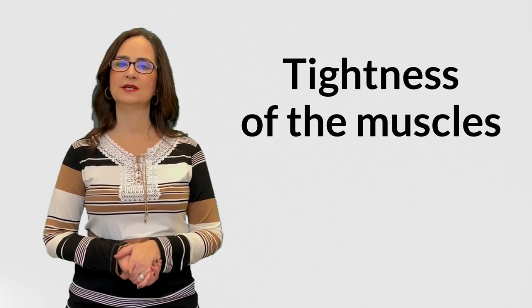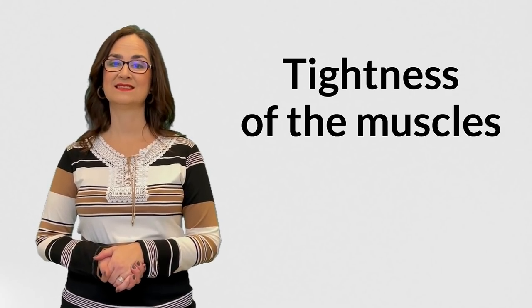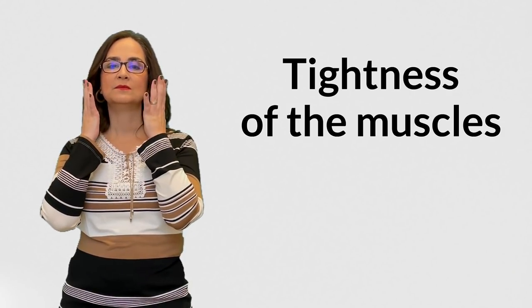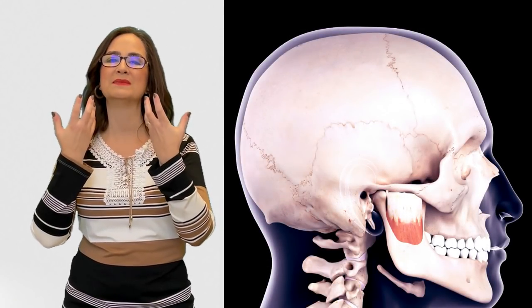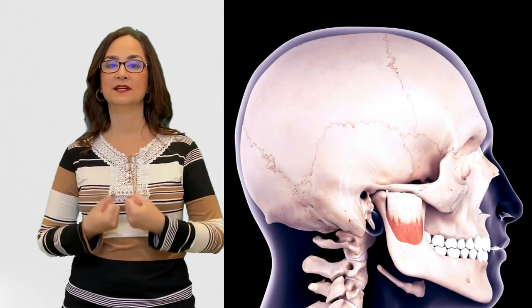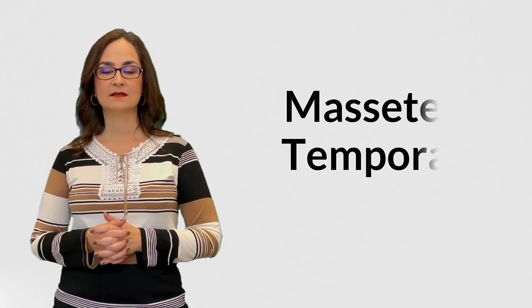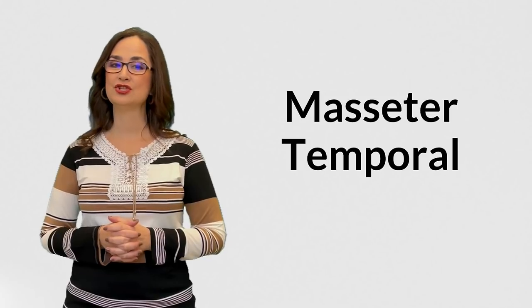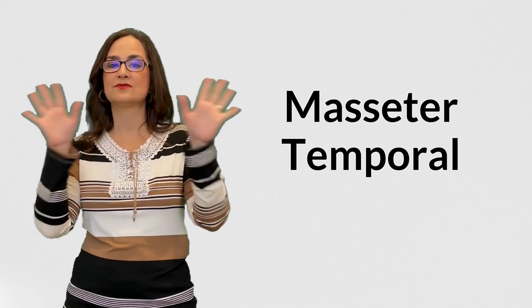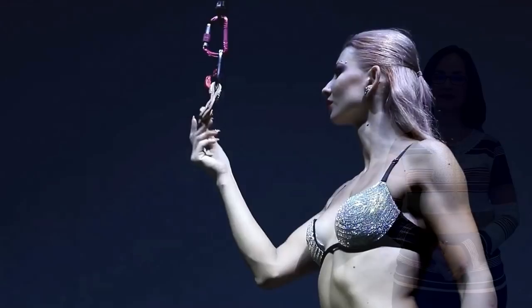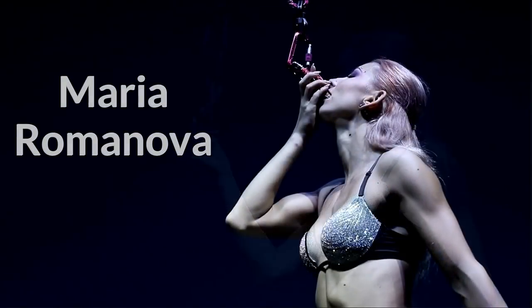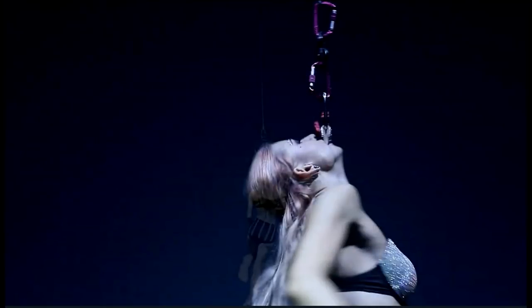One of the most common causes of TMJ dysfunction is muscle tightness. Patients can do exercises to relax and stretch the muscles — especially the muscles that close the mouth, which are very strong. The main muscles are the masseter and the temporalis. These two muscles are probably the strongest muscles of the body relative to their small size. Have you seen the Iron Jaw Girl? Her name is Maria Romanova.